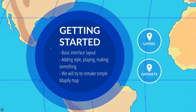We'll be looking at the basic interface layout of Mapbox Studio, which is pretty complex. We'll cover layers connected to datasets — which is a little confusing at first. We'll be adding a style and playing around. I want you to mess around; you don't have to do exactly what I'm doing. Follow along with the video, pause, try to style your map the way you want, then come back and keep watching.